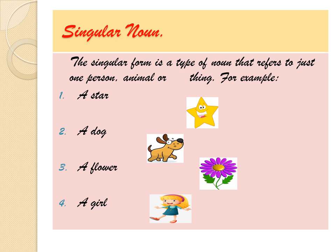Singular noun. Singular means only one. For example, a pencil — one pencil, one chair, one apple. The singular form is a type of noun that refers to just one person, animal, or thing. For example: a star, a dog, a flower, a girl. Singular means one — single person, single animal, single thing.